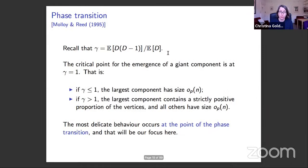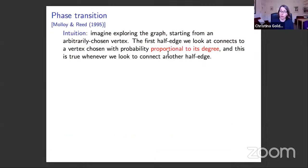This is a result due to Molloy and Reed in 1995. As is typical in these circumstances, the most delicate behaviour occurs at the point of the phase transition — at gamma equals one — and that is going to be the focus of this work.